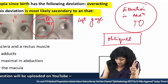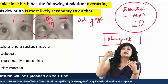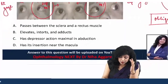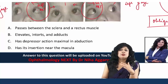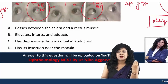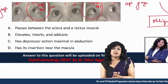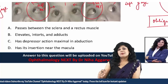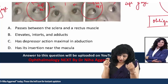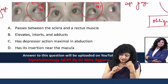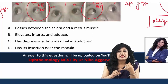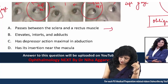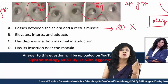Since the oblique is doing elevation, this points to the inferior oblique. Now, to confirm, let's go through the answer options using factual knowledge. Option one states the muscle passes between the sclera and the rectus muscle — that describes the superior oblique, so this is not the answer. We need the muscle doing elevation in adduction.